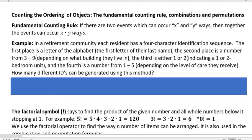In a retirement community, here's my example for you. Each resident has a four-character identification sequence. The first place is the letter of the alphabet, the first letter of their last name. The second place is a number from three to nine depending on what building they live in. The third is either one or two indicating one or two bedroom unit, and the fourth is a number from one to five depending on the level of care that they receive. How many different IDs can be generated using this method?